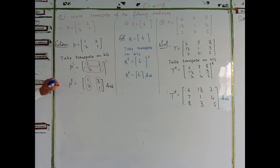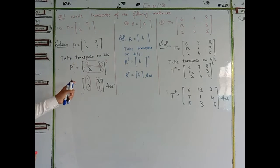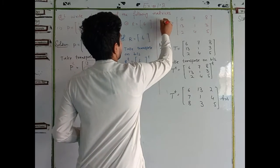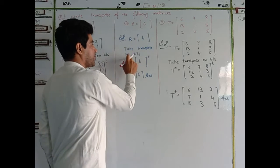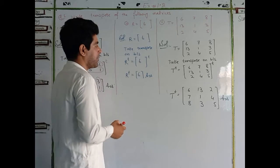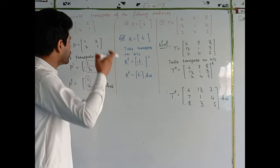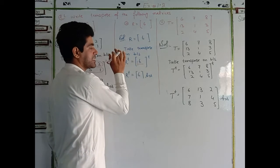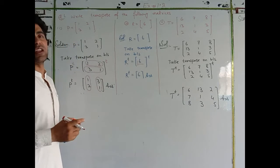This is P transpose. For question number 2, the matrix has 4 numbers. The first row has 3 numbers and the second row also has 3 numbers — for example, if it equals 6. The transpose is then found. If we have one number element, then we have the corresponding transpose number.